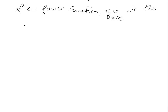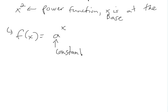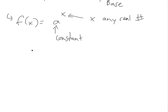So let's look at some properties. We'll have f of x equals a to the x, where a is a constant, and x is any real number. Some properties: if x equals 0, a to the 0 is equal to 1. And if x equals 1, a to the 1 equals a.